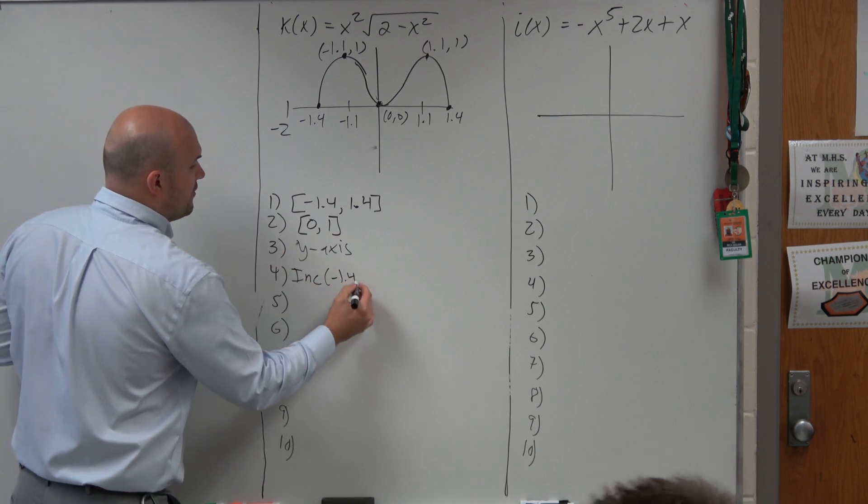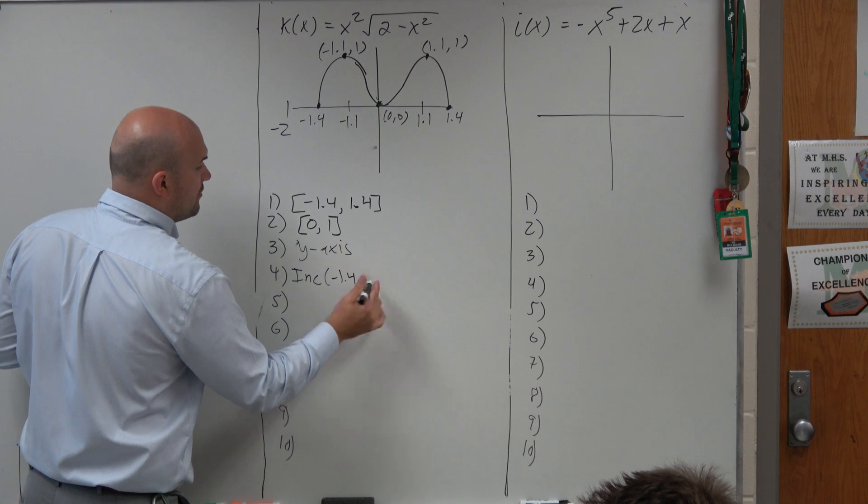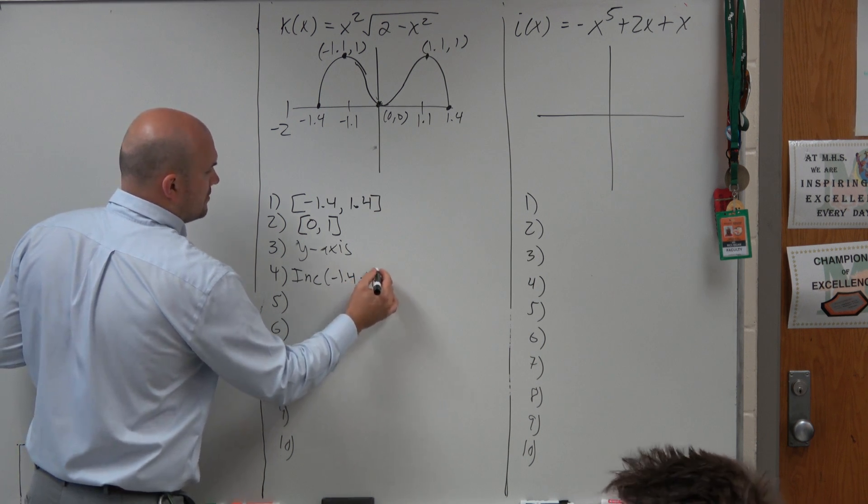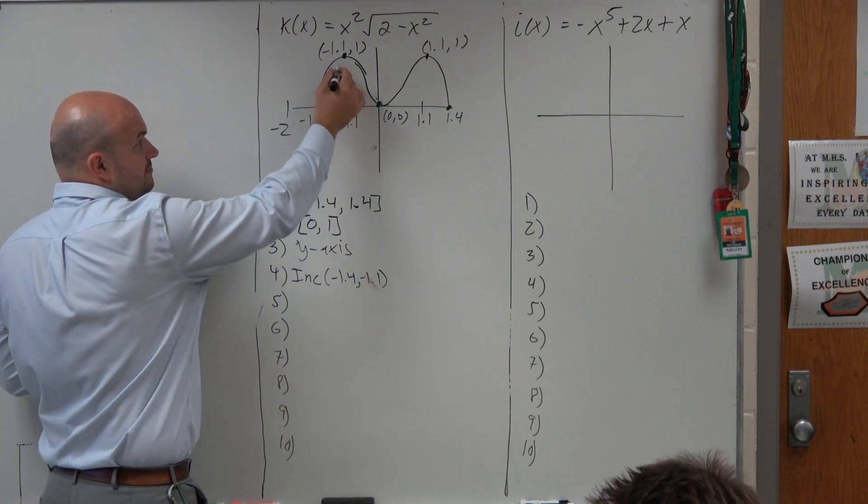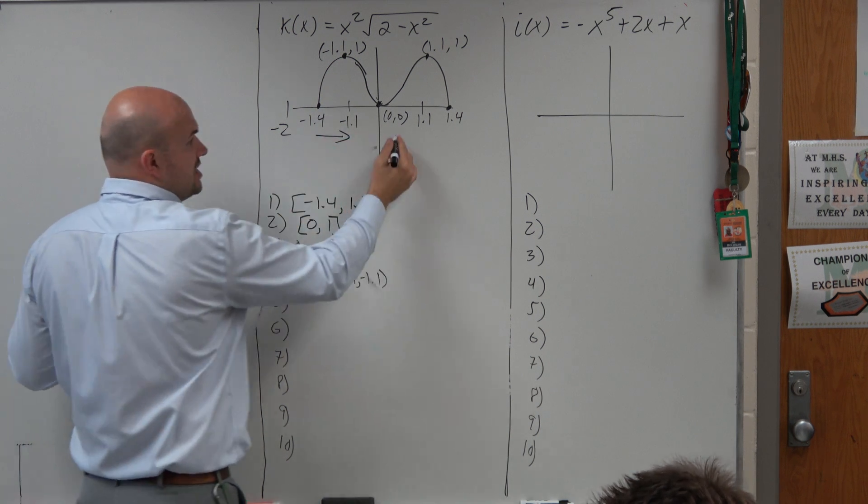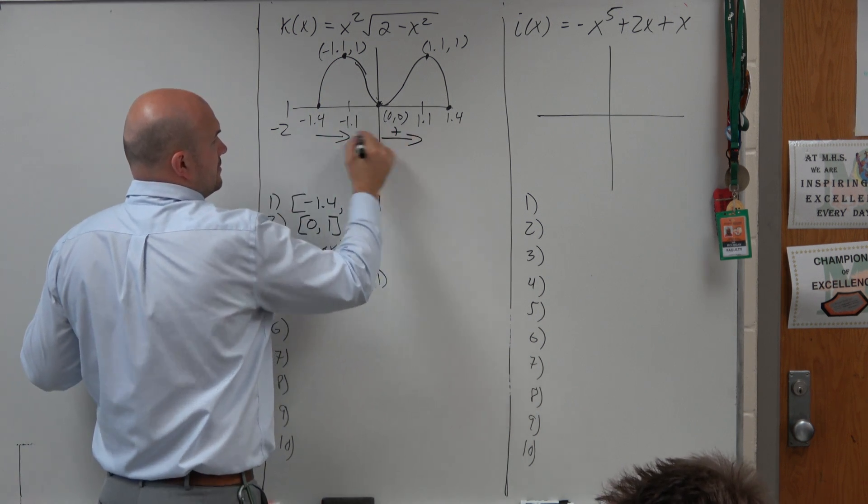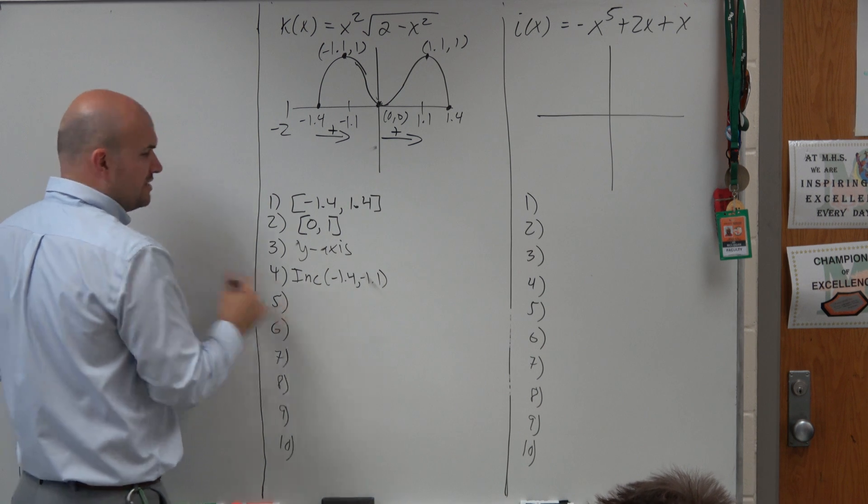Well, that's from negative 1.4 to negative 1.1. Right? You guys agree? From here to here, the graph is increasing. It's also increasing between 0 and 1.1.